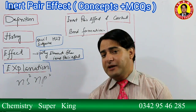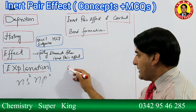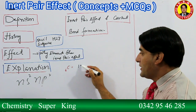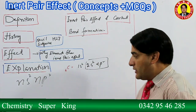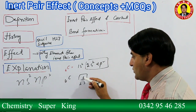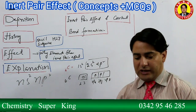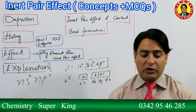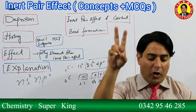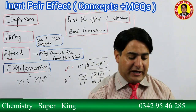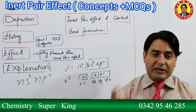For example, let us take Carbon. Carbon's outer electronic configuration is 2s2 and 2p2 - specifically 2Px1, 2Py1, and 2Pz0. This is the ground state electronic configuration. In the ground state, Carbon has two partially filled orbitals, so it should form two bonds. But in actual practice, Carbon never forms two bonds - it always forms four bonds. This is Carbon's tetravalency.